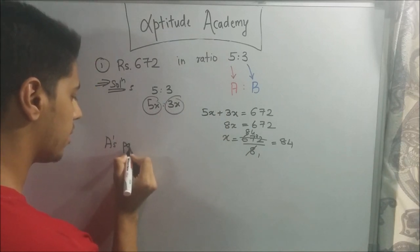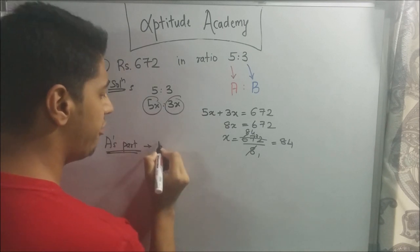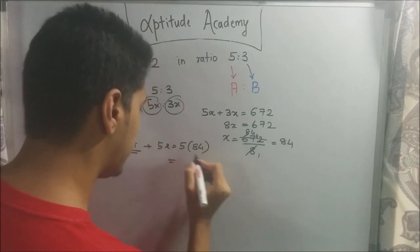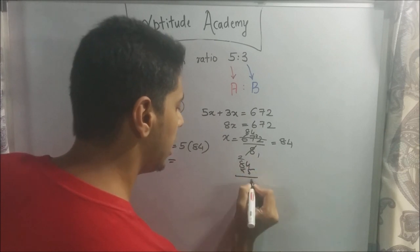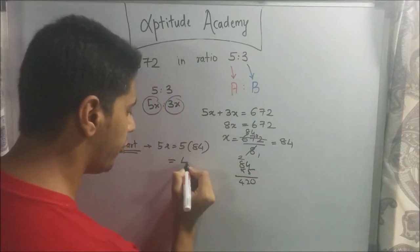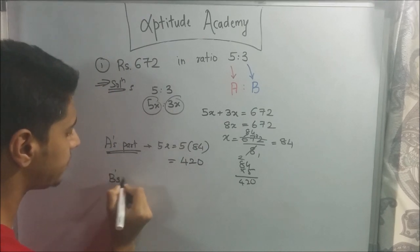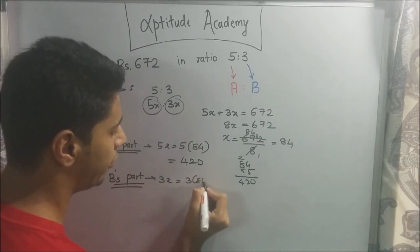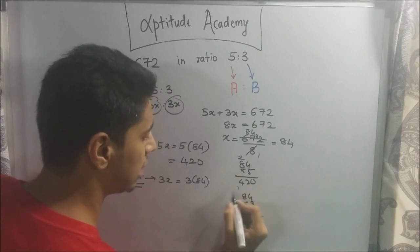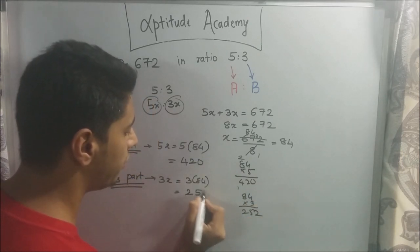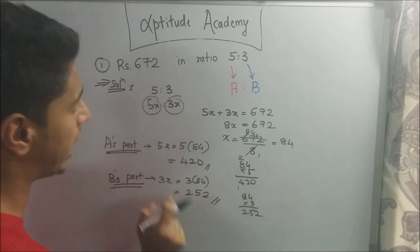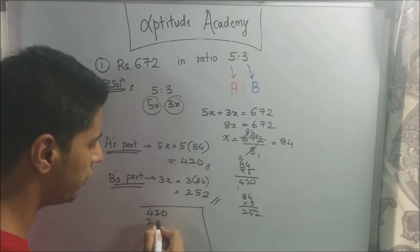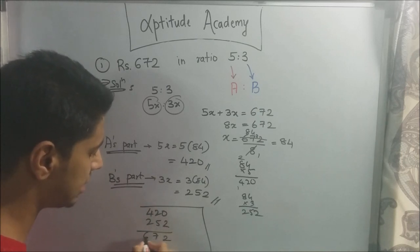So, A's part will be 5 into 84, which is 420. And B's part will be 3 into 84, which is 252. Now just to make sure, you can just add it up. 420 plus 252 is 672, which is what you began with.